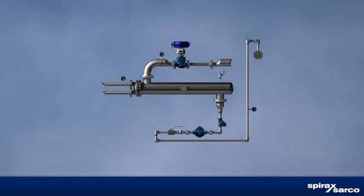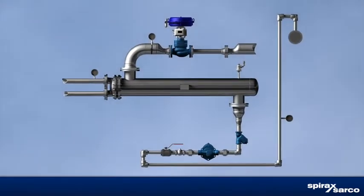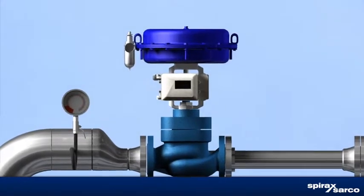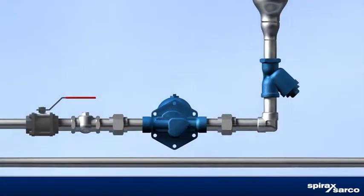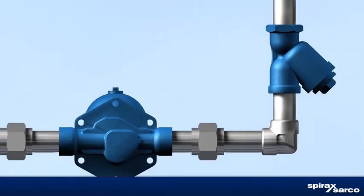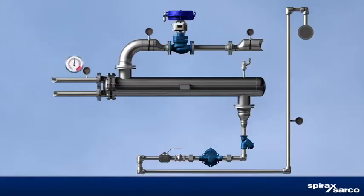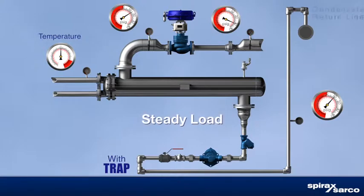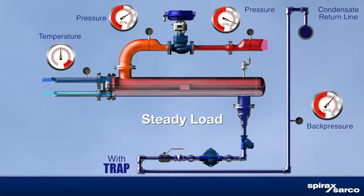The most common process heating heat exchanger hookup involves a temperature control valve on the steam line to the heat exchanger and a steam trap on the condensate line from the heat exchanger. The shell side is a steam space. A control sensor signal at the tube side outlet is used to throttle the steam control valve to maintain set point temperature. Higher pressure in the steam space than in the condensate recovery line produces effective condensate removal and lift to the return system.